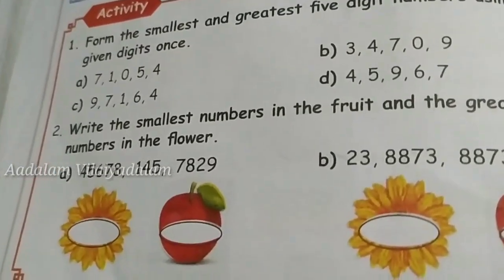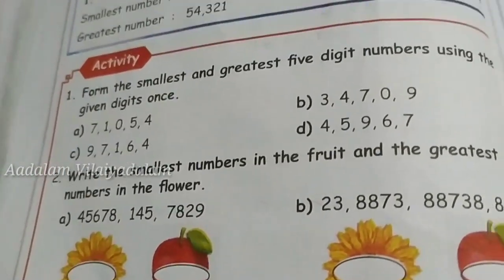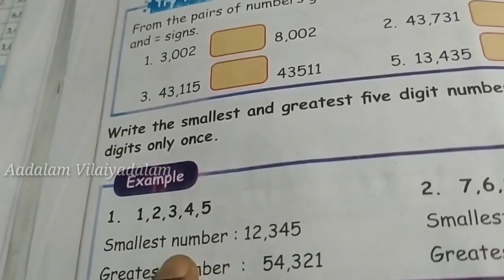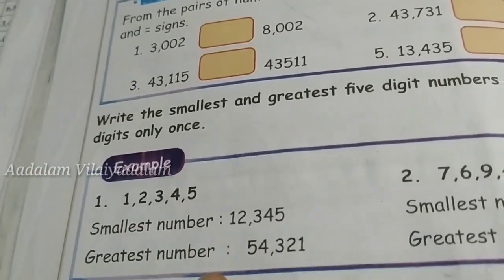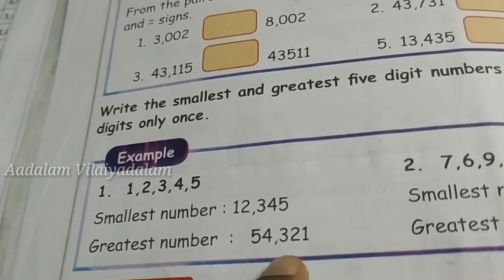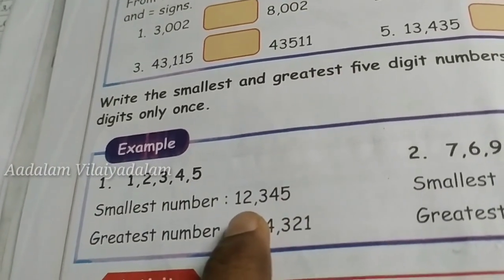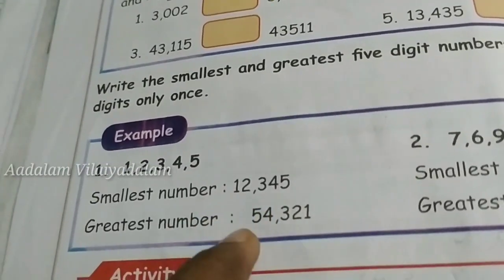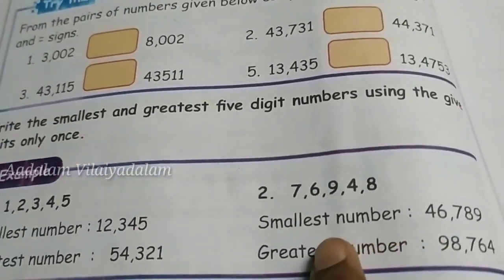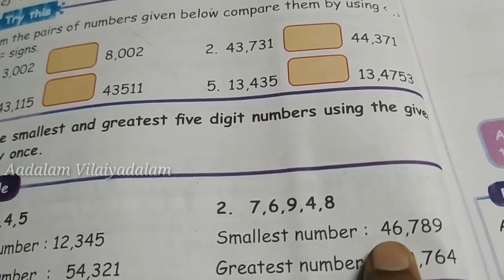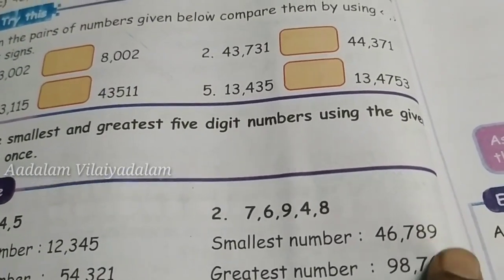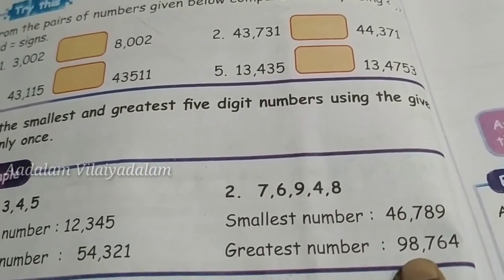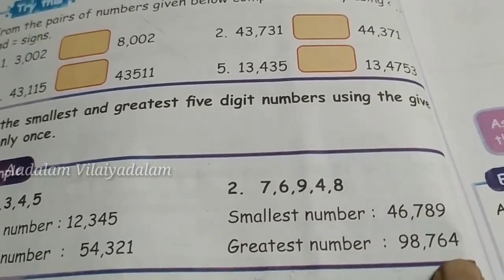There is one more activity: one number is given and you have to form the smallest and the greatest number from its digits. For example, the smallest number is 1 2 3 4 5 and the greatest is 5 4 3 2 1. Similarly, the smallest is 4 6 7 8 9 and the greatest is 9 8 7 6 4.